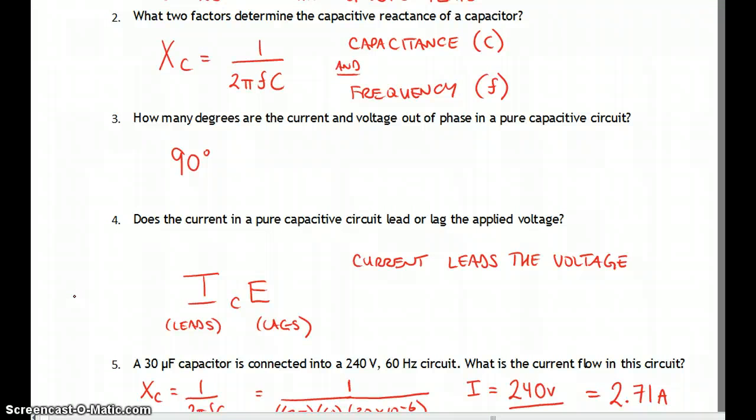The way to think of this is that current has to actually flow in the circuit over to the capacitor, and then you're going to have a voltage develop across the capacitor. So current leads and the voltage lags.